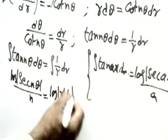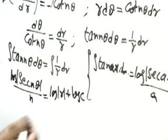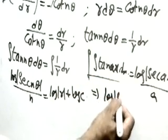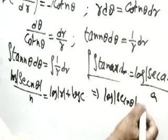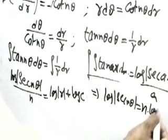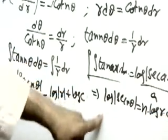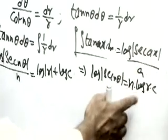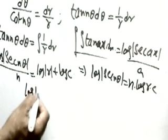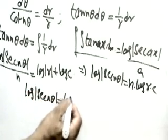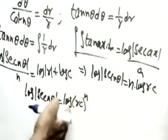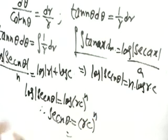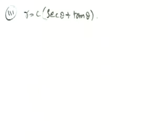Combining: (1/n)log|sec(nθ)| = log(rc). Multiplying both sides by n: log|sec(nθ)| = log(rc)^n. Cancelling log: sec(nθ) = (rc)^n. Therefore the orthogonal trajectory is sec(nθ) = r^n · c^n.